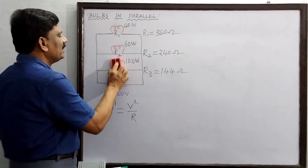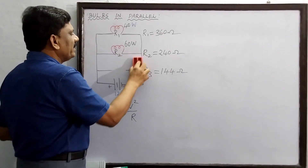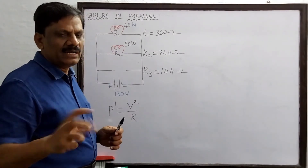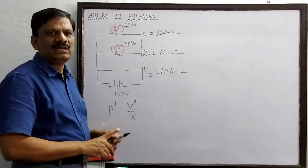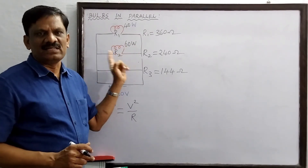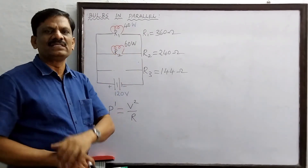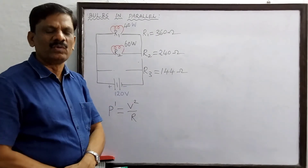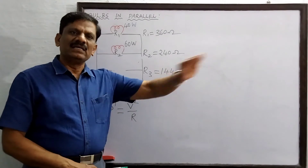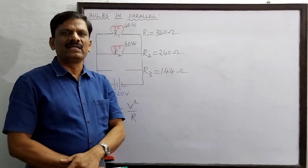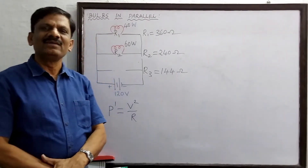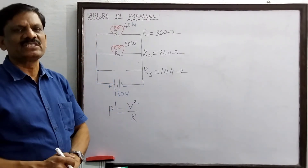If we remove any one bulb — say the third bulb — from the parallel circuit, the other two bulbs will glow with their original brightness. This contrasts with the series combination, where removing one bulb stops the current entirely and all remaining bulbs go out.